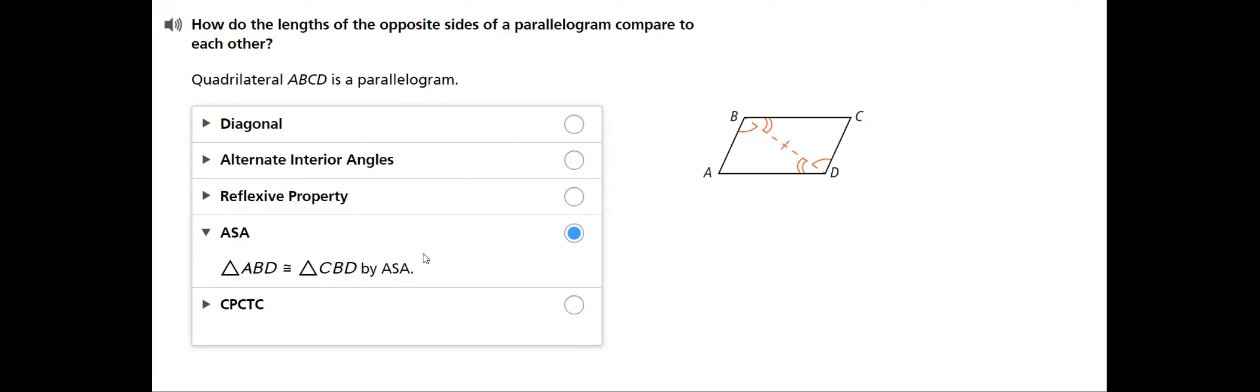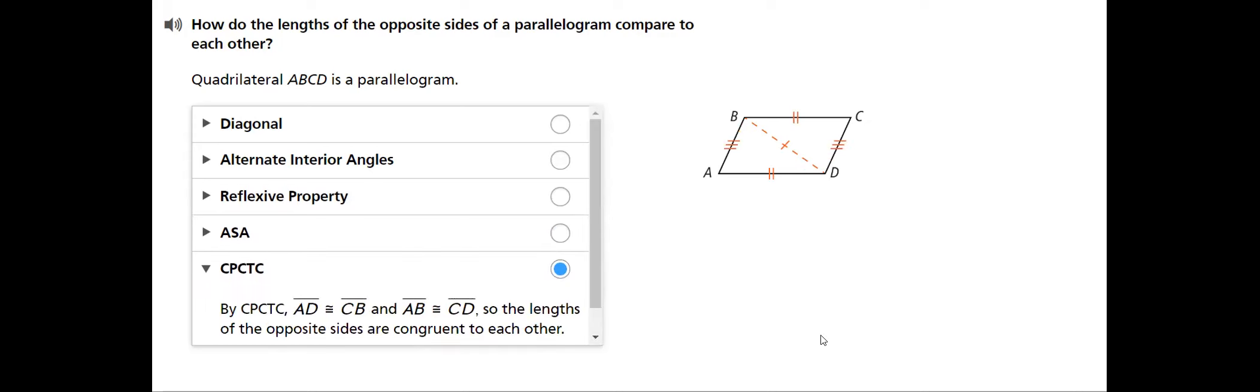So, the two triangles are congruent by ASA, angle side angle. Hence, CPCTC. Corresponding parts of congruent triangles are congruent. We took that before.